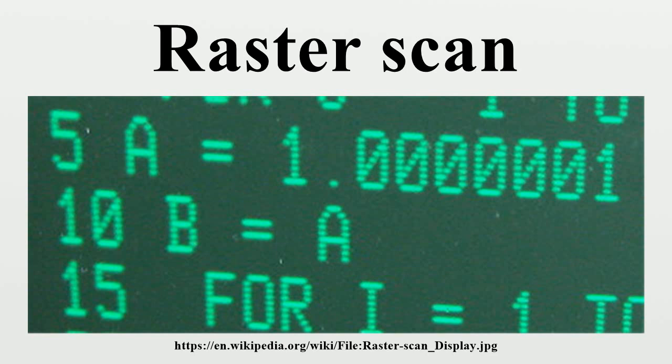Computer text is mostly created from font files that describe the outlines of each printable character or symbol. These outlines have to be converted into what are effectively little rasters, one per character, before being rendered as text — in effect merging their little rasters into that of the page.